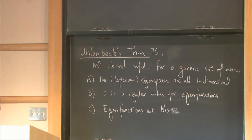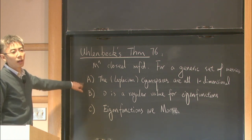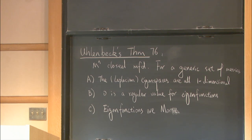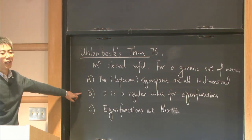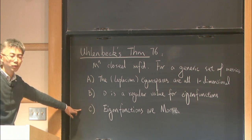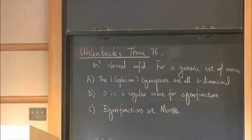The talk I'm going to give today is an analog in the theory of minimal surfaces for this Uhlenbeck theorem. Particularly, what I prove can be viewed as an analog of property A: I'm going to prove that the nonlinear eigenfunctions, which are minimal surfaces for the volume spectrum, are simple. For property B, I don't know any analogs. For property C, the analog in minimal surface theory would be the theorem of Burch-White, who proved that for a generic set of Riemannian metrics, all minimal surfaces are non-degenerate.